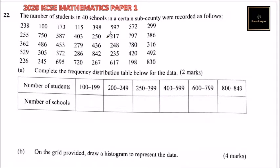This is question number 22, and we are told the number of students in 40 schools in a certain sub-county were recorded as follows. So we have records of the number of students in the 40 schools, 238 all the way to 830. Part A, complete the frequency distribution table.